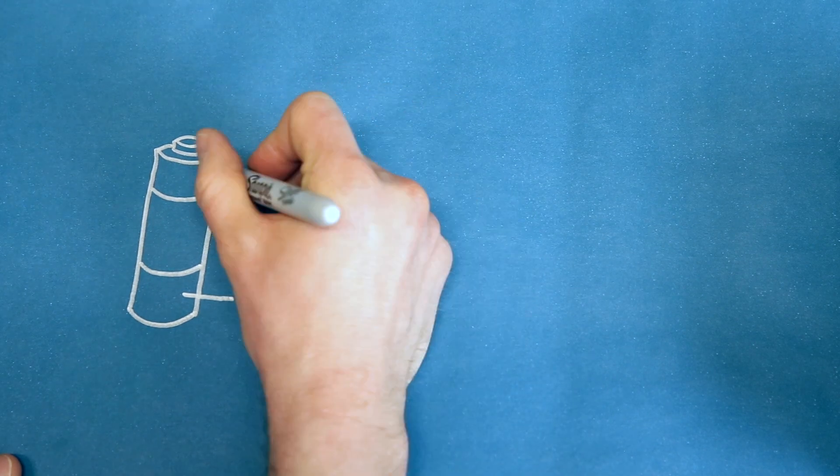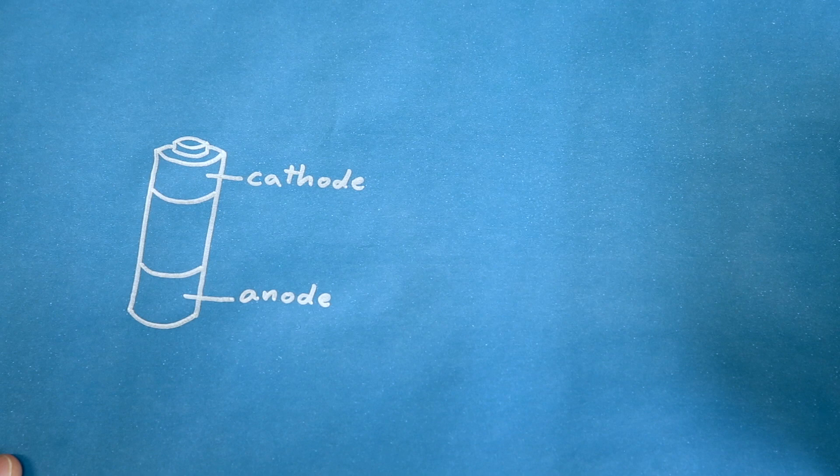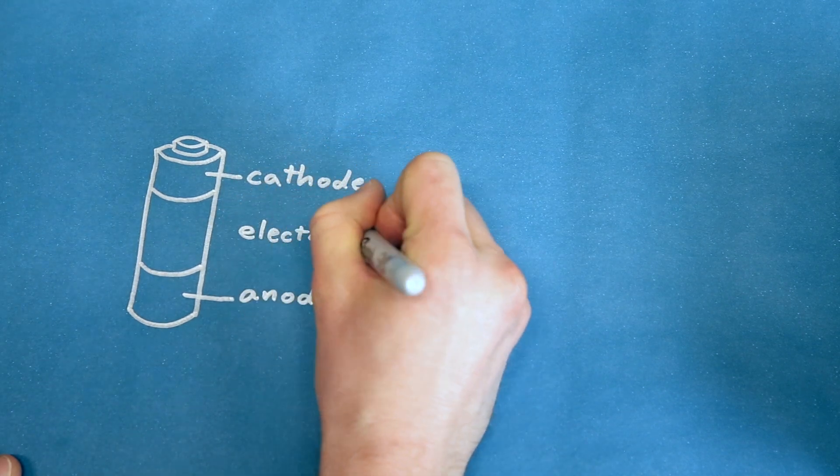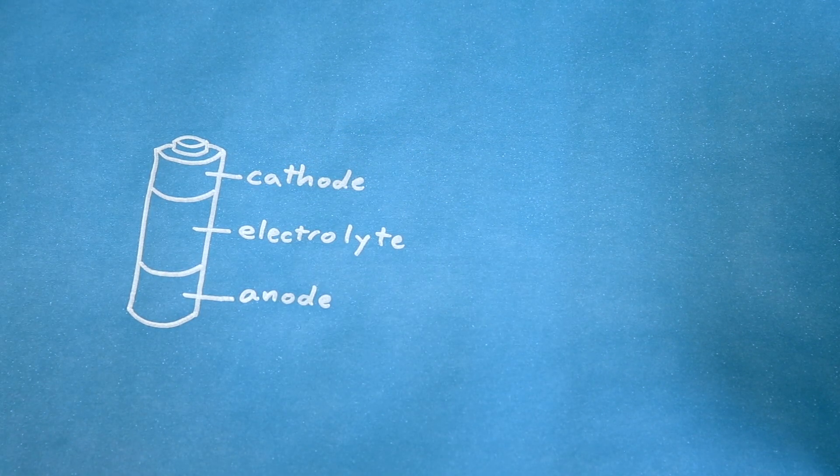Then there's the cathode. This is marked as the positive side. Electrons flow into the cathode. And then there's the electrolyte. This is usually a liquid or gel that reacts with the anode and cathode.